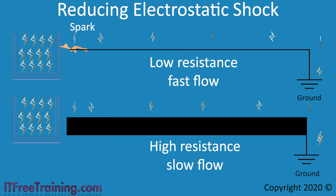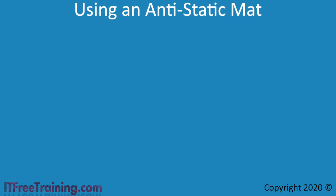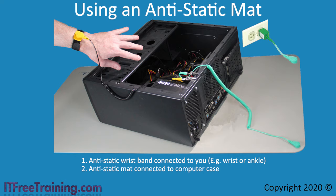Anti-static mats tend to be blue or green, however they can be of any color. The anti-static mat will generally be made of a number of layers. The top layer is generally a protective layer and the next layer is used to slowly conduct electricity. To use an anti-static mat, place it down and place what you are working on onto the anti-static mat. The next step is to connect the anti-static wrist strap to yourself. Usually this will be on the wrist, but you could put it on your ankle if you wanted to. Make sure that it is in contact with your skin, not blocked by something like a long sleeve shirt. If it is blocked, the anti-static wristband won't work effectively. The next step is to connect the computer case to the anti-static mat.